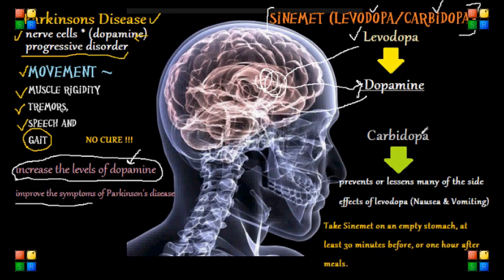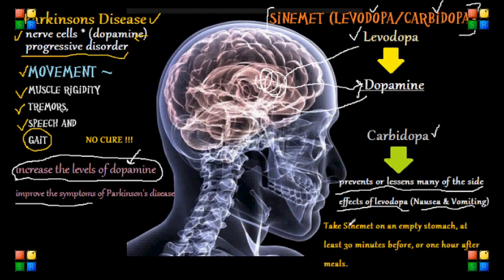With carbidopa, it increases the effectiveness of levodopa and prevents or lessens many of its side effects, such as nausea, vomiting, and occasional heart rhythm disturbances. Carbidopa works by preventing levodopa from being broken down before it reaches the brain. Because of this, it allows for a lower dose of levodopa, which causes fewer symptoms such as nausea and vomiting.